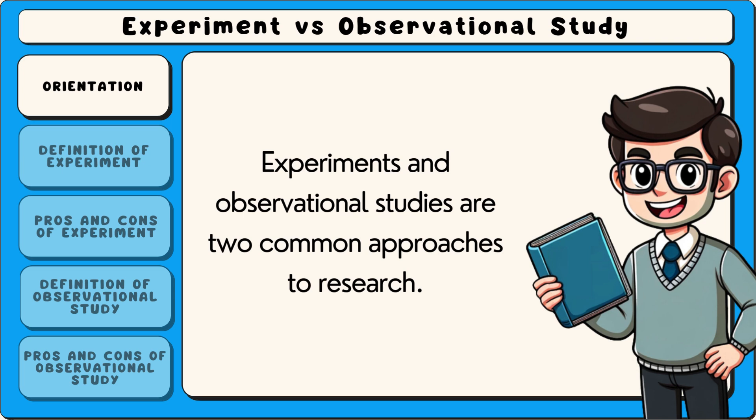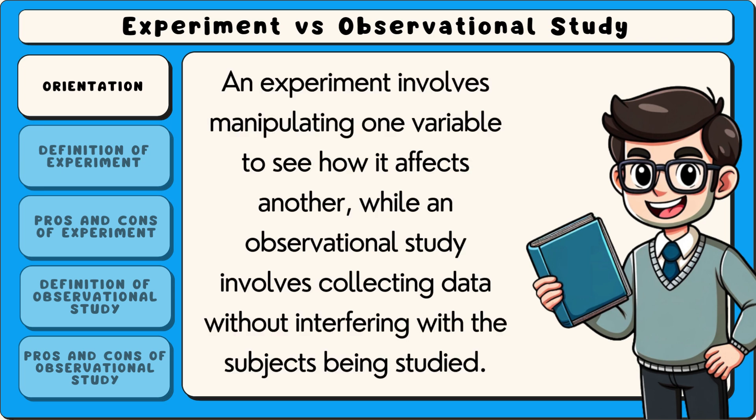Experiments and observational studies are two common approaches to research. An experiment involves manipulating one variable to see how it affects another, while an observational study involves collecting data without interfering with the subjects being studied.